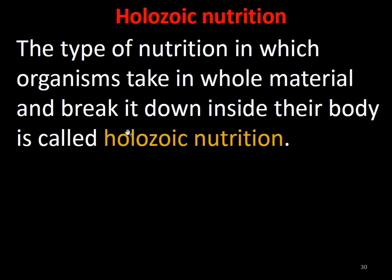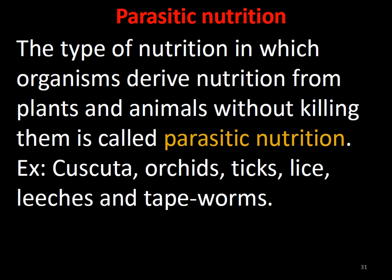Holozoic nutrition is where organisms take in the whole food material and break it down inside their body, for example humans and almost all animals, using specialized digestive systems. Parasitic nutrition is where organisms derive nutrition from plants and animals without killing them — examples include Cuscuta, orchids, ticks, lice, leeches, and tapeworms, which live with the host organism and get nutrition from them.